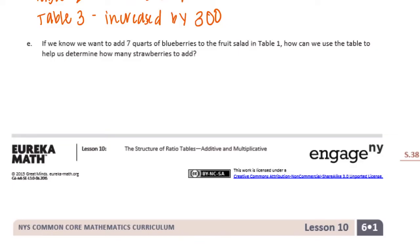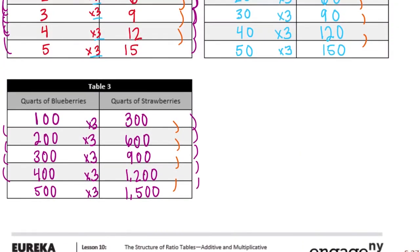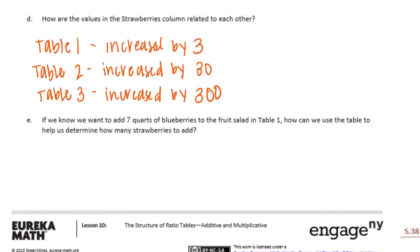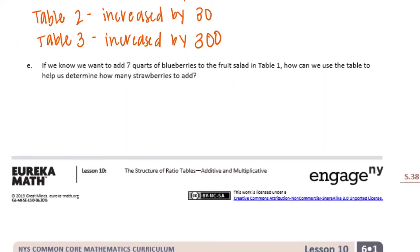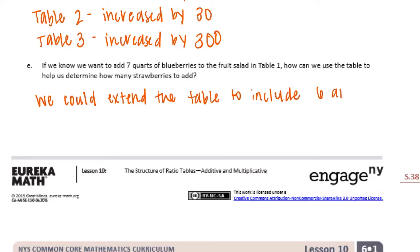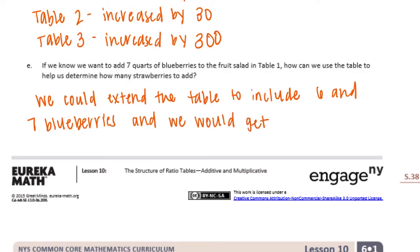Part E: If we want to add 7 quarts of blueberries to the fruit salad in Table 1, how can we use the table to help us determine how many strawberries to add? One way is to extend the table. If we had 6 blueberries, that would be 18 strawberries, and if we had 7, that would be 21 strawberries. So we can extend the table to include 6 and 7 blueberries and we would get 21 strawberries.